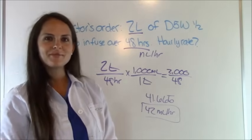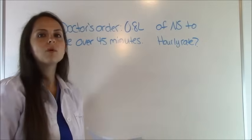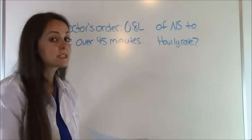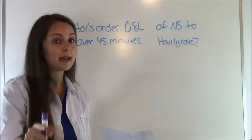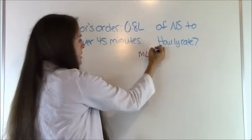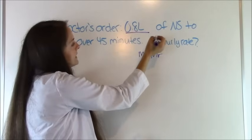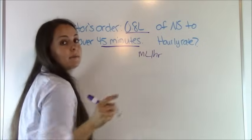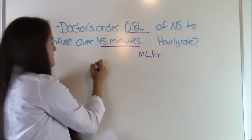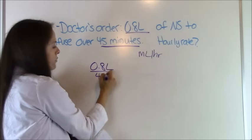Now let's do our next problem. Okay our next problem says, doctor orders 0.8 liters of normal saline to infuse over 45 minutes. What will our hourly rate be? So we're trying to get milliliters per hour, so that's where we're trying to go. And our important parts of this is 0.8 liters and we want to go in over 45 minutes. So let's set up our dimensional analysis problem and we're going to start with what the doctor ordered.